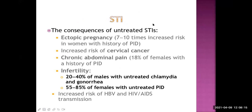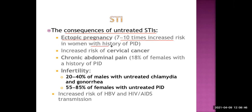What are the consequences of untreated STI? One is ectopic pregnancy — the zygote is implanted outside the endometrial cavity, most commonly in the fallopian tube. There is a 7 to 10 times increased risk in women who have a history of PID regarding ectopic pregnancy. What is the connection between salpingitis, which is a part of PID, and ectopic pregnancy?